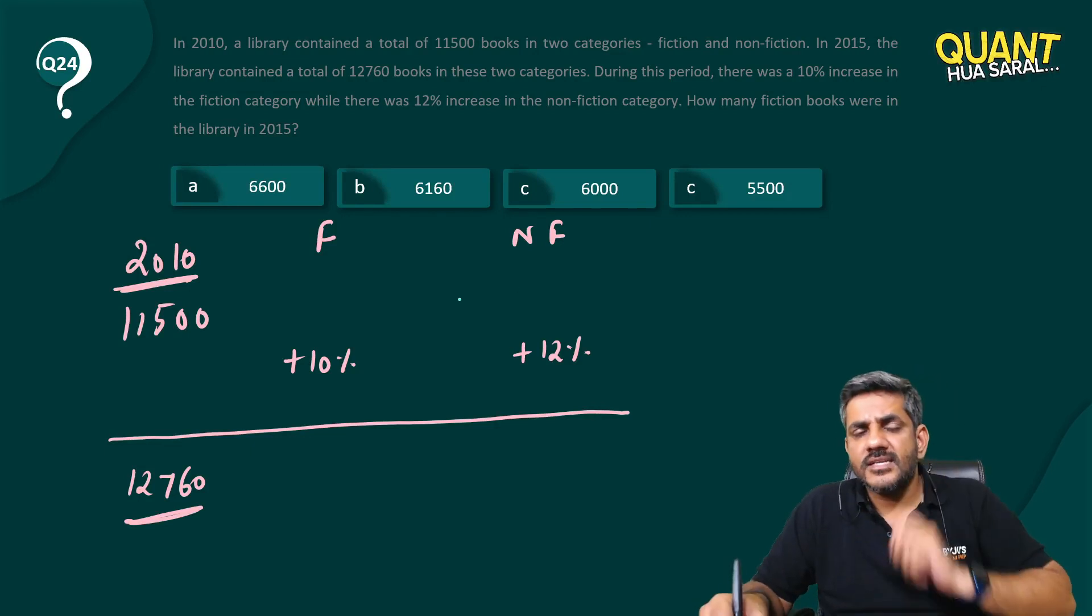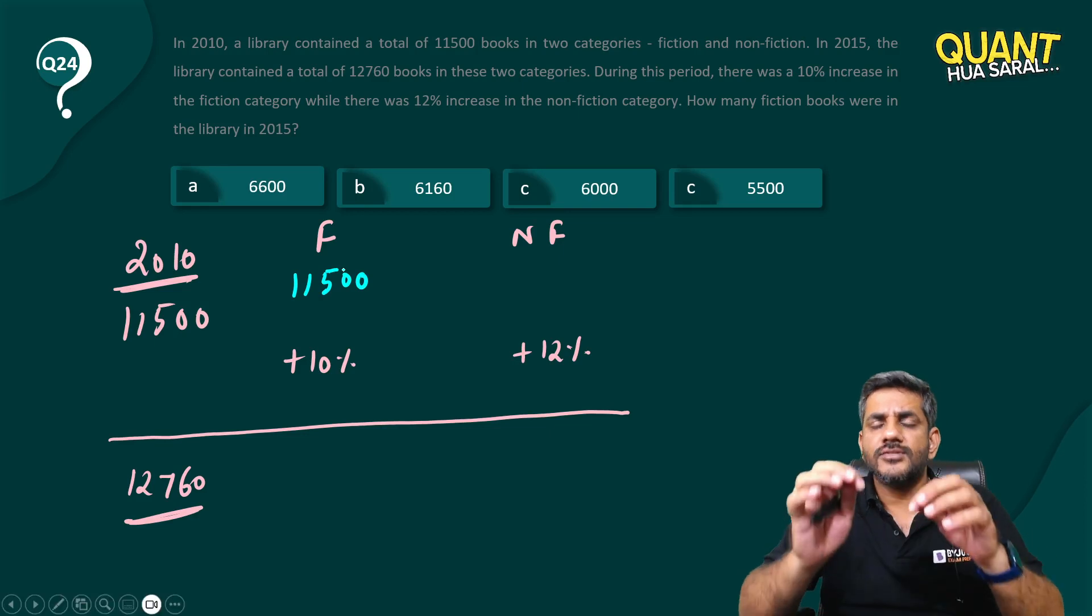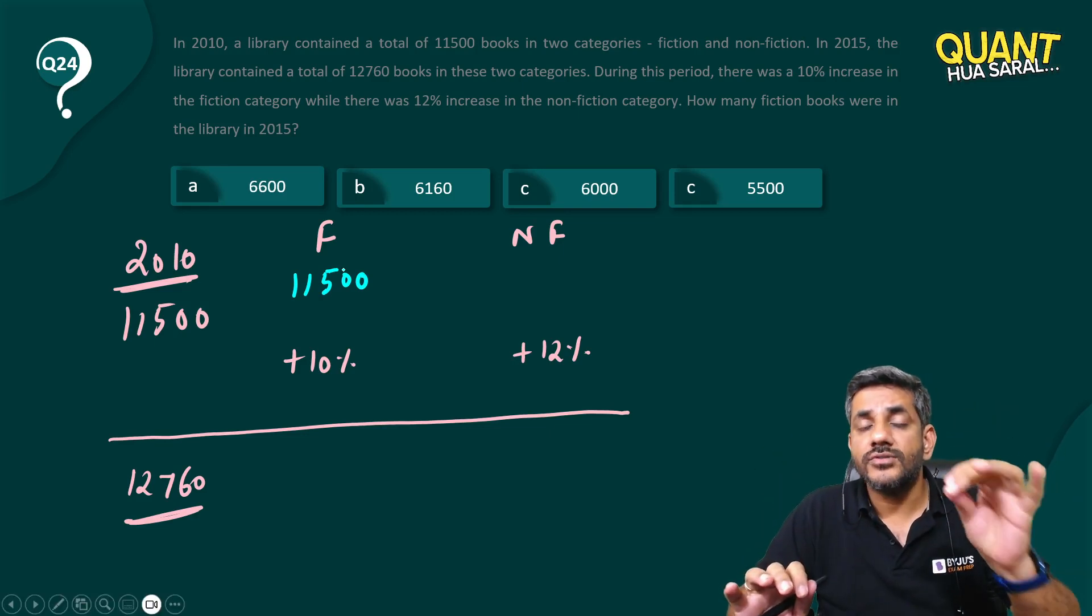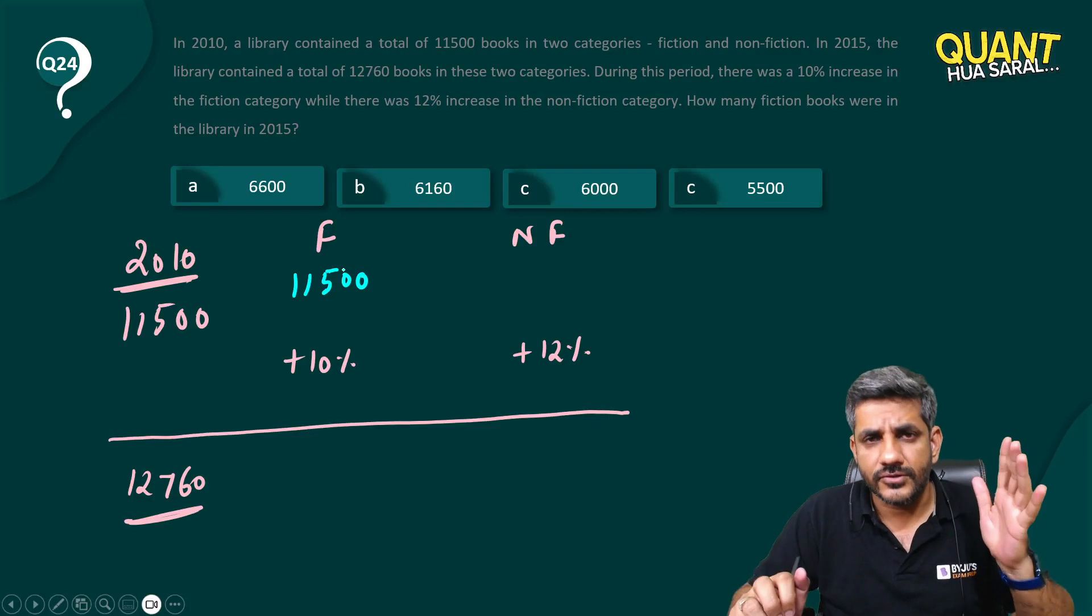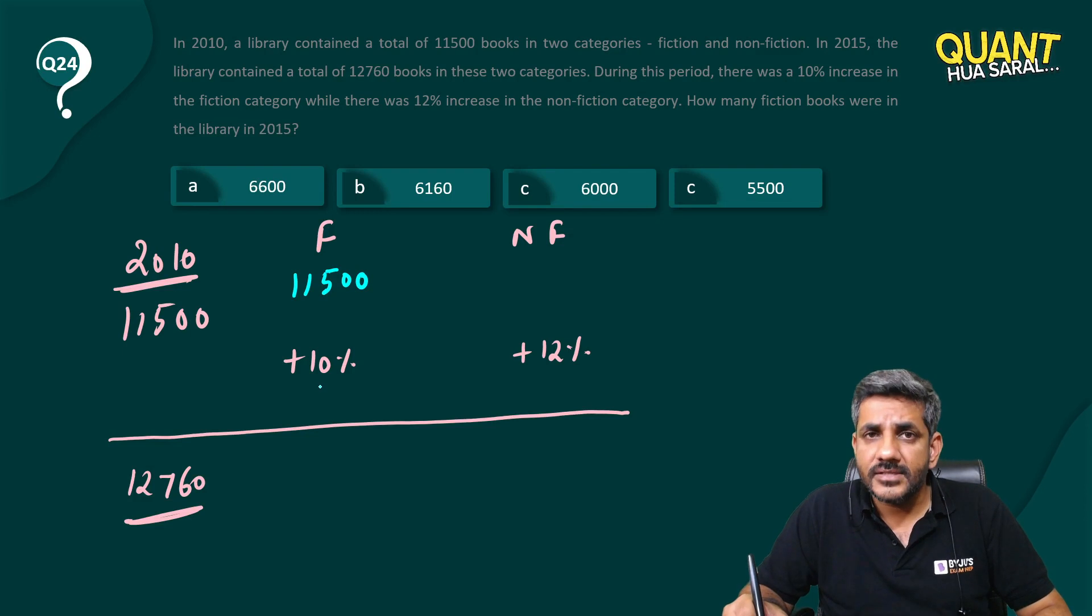The way of discussing this is that let us say, fiction books are all 11,500. Let us assume for a minute, had all 11,500 been fiction books, how many new books would have been there? 11,500 plus 10% of that. That is, of course, 1,150. When I add 1,150 in this, it becomes 12,650.